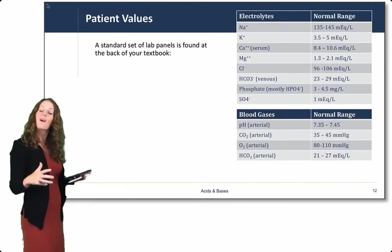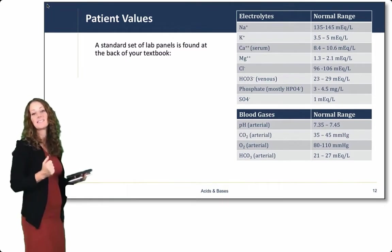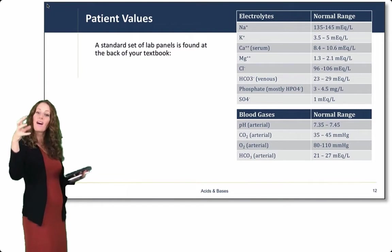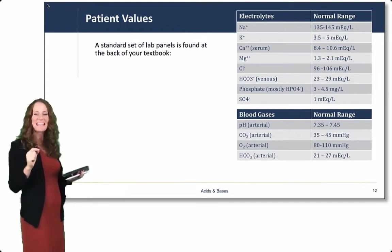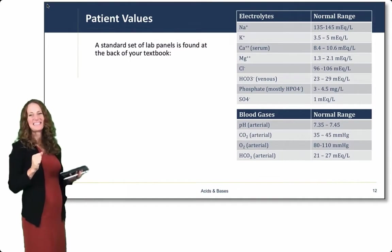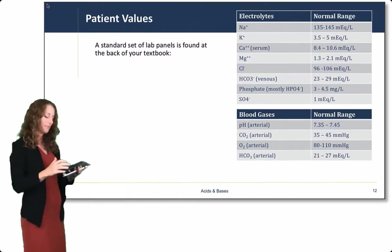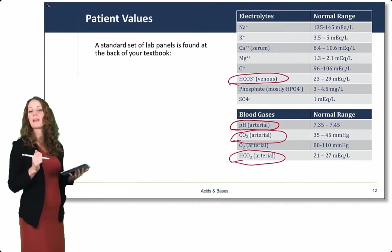By now, we've gone through normal levels for electrolytes in the body, and it's time to add blood gases to those levels. If you look in the back of your textbook, you're going to find a panel of normal lab values, which comes in handy for a lot of things. Here, we're looking at the electrolytes and the blood gases, which are going to be important for looking at acid-base balance. In particular, you're going to want to pay attention to pH, carbon dioxide, and bicarbonate levels.